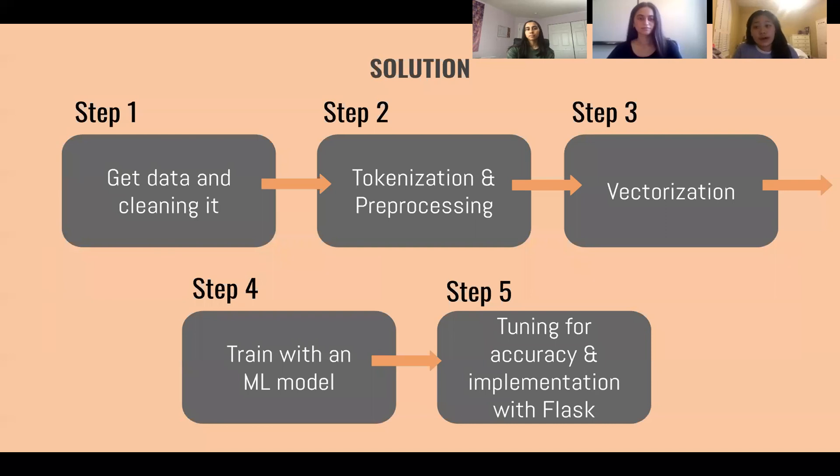So to create our NLP model, we took a five step approach. So the first step was just getting the data and cleaning it. And then we moved on to tokenizing and pre-processing our data. And then we vectorized our data before training that data with a machine learning model and determining which algorithm was the best fit. And then after we did that, we tuned our model for accuracy and then implemented it with a web application called Flask.